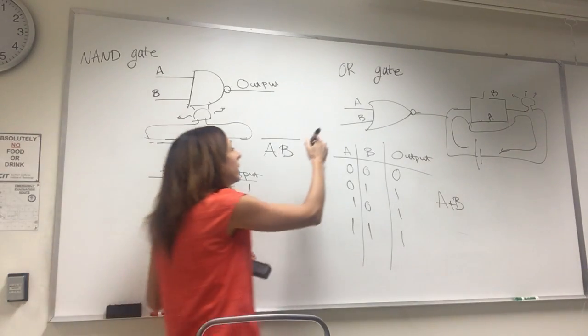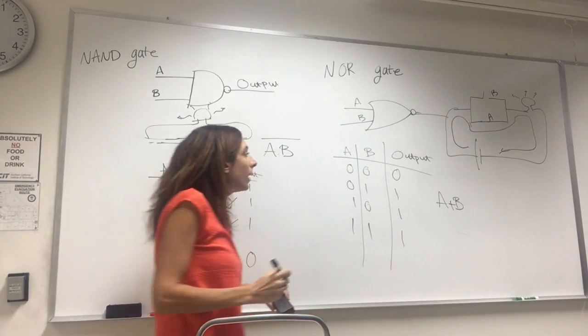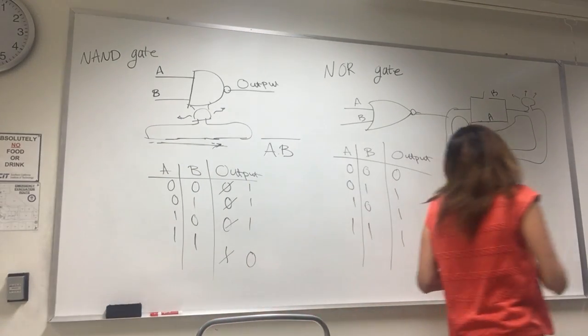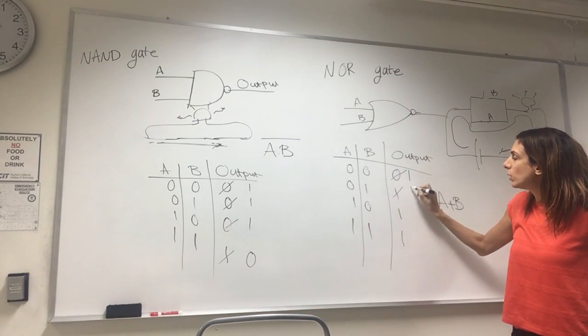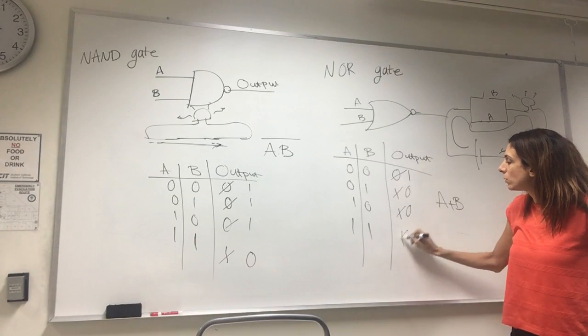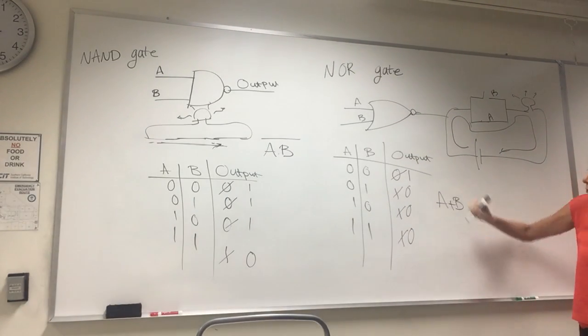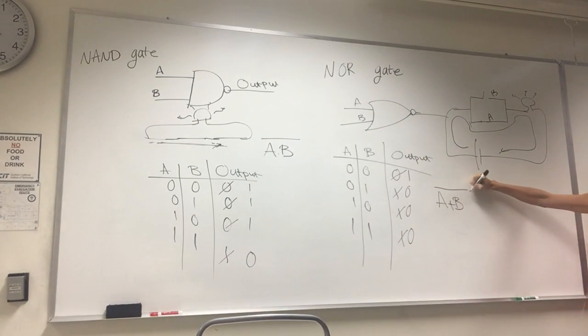Okay. What about NOR gate? Again, when you make it NOR, that means you have a NOT. Your output is the opposite of OR. So one, zero, zero, zero. And the Boolean expression, just put a bar on top. So, so far we've covered AND, OR, NAND, NOR. Any questions? Okay.